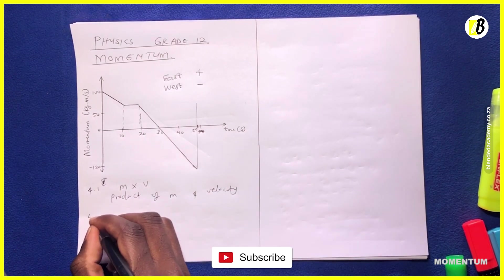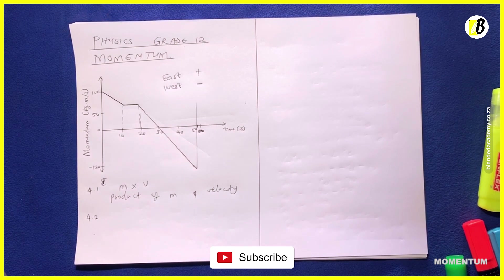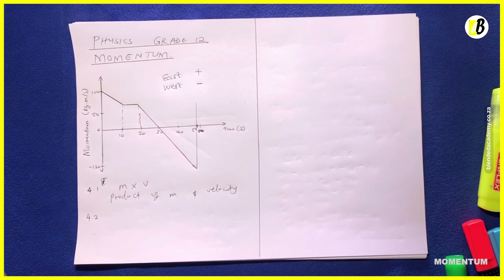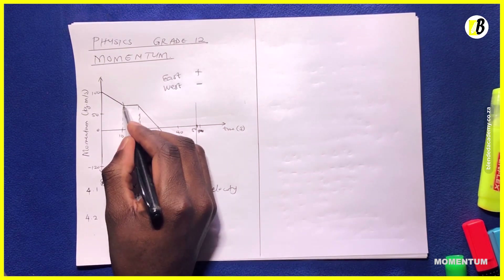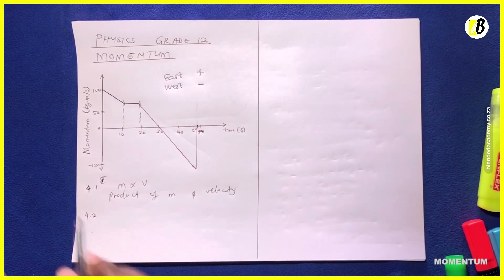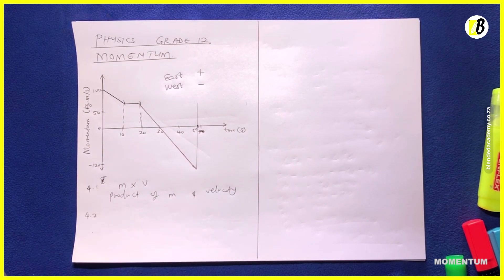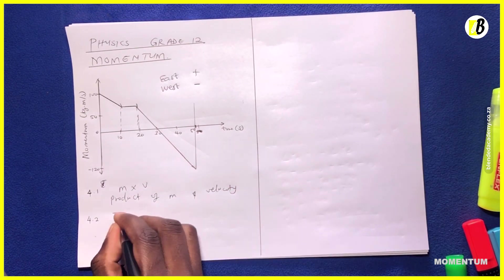The next question says the net force acting on object A is zero between times t10 seconds and t20 seconds. It goes on to say: use the graph and relevant equation to explain why this statement is true. So we need to explain why the net force between these two times is zero.